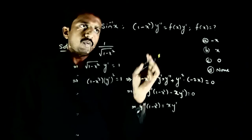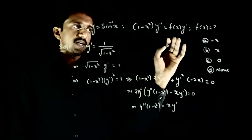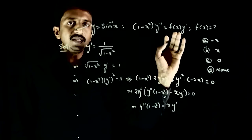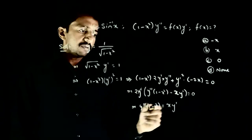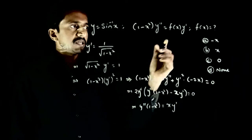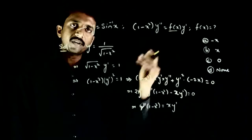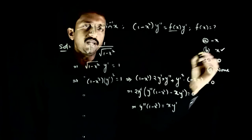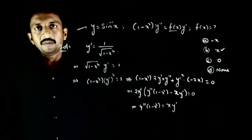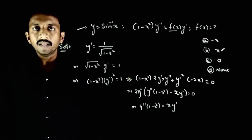So 1 minus x squared times y double dash is equal to x times y dash. According to the question, this equals f of x times y dash. Therefore f of x is equal to x. Option B is the right answer.